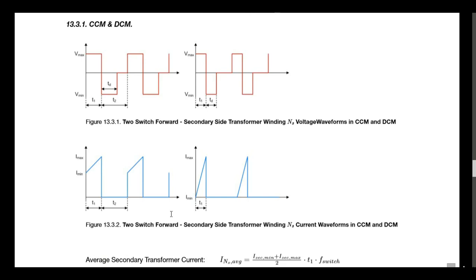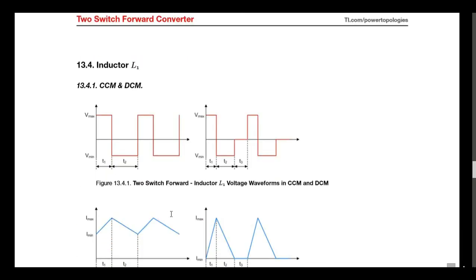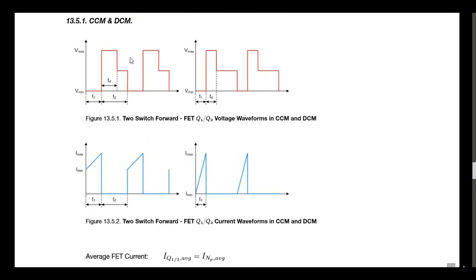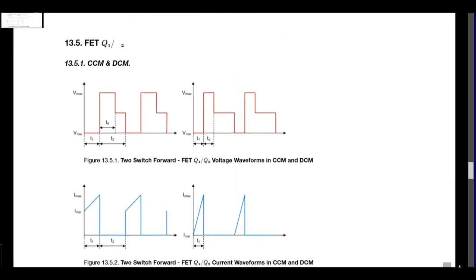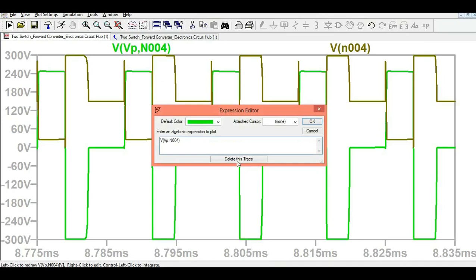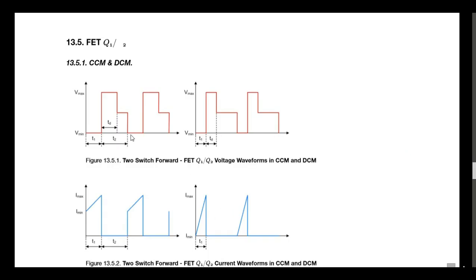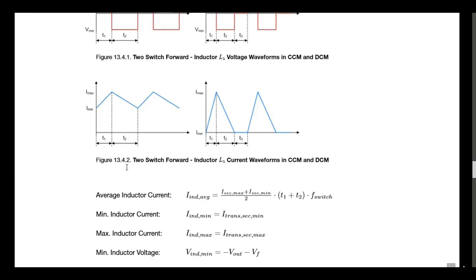Now let me show you the voltage across the switch. Deleting the primary voltage trace, you can see: the switch voltage is high, then it is 0.5 times the input voltage, then it comes to zero. If you look at the waveform given in the Texas Instruments reference, it shows V-maximum, then somewhere half of V-maximum, then coming to zero — this is exactly the voltage across the switch.